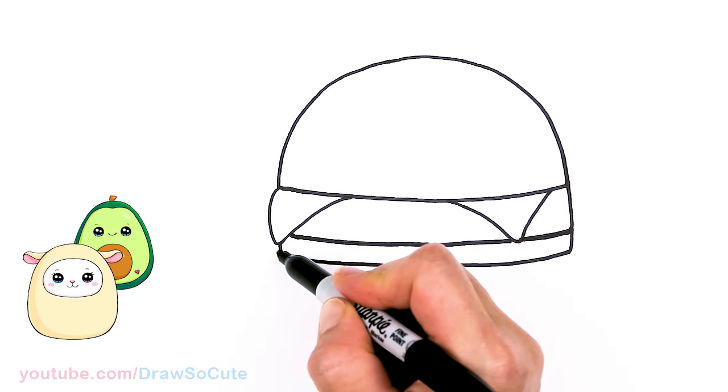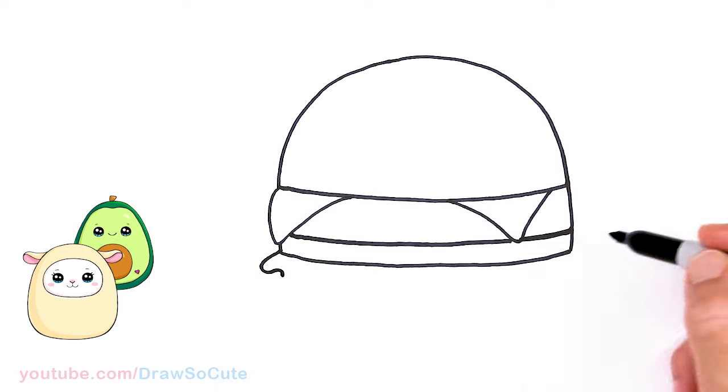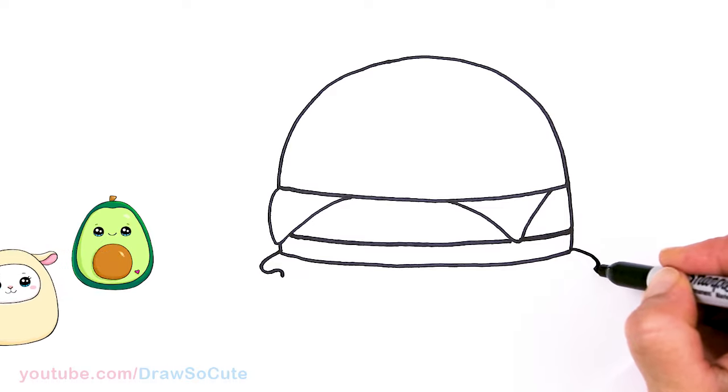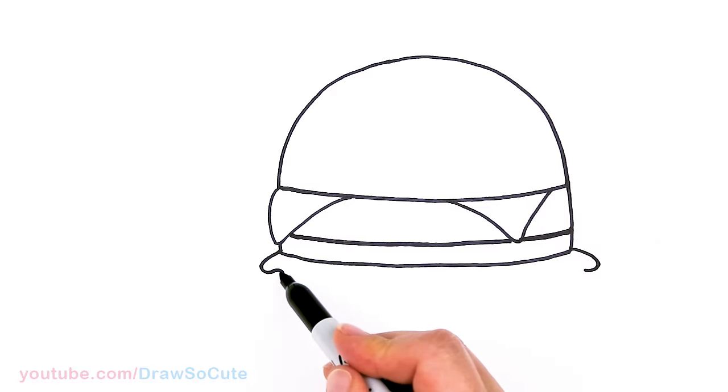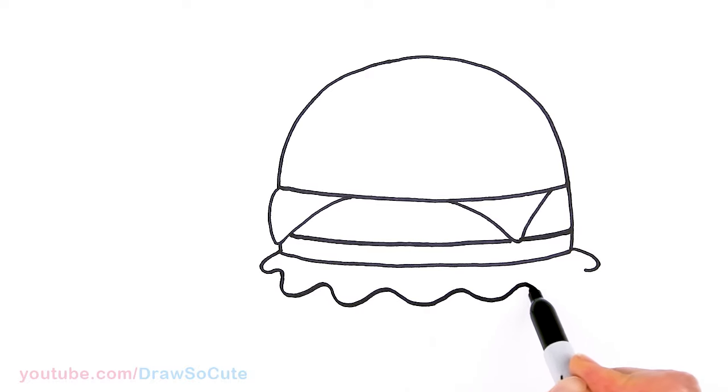So the lettuce let's pop it out right here and I'm just going to curve and wiggle all the way across. Same thing here. So let's go ahead and just wiggle your way across. And connect. There.